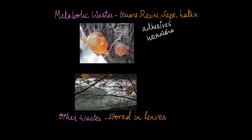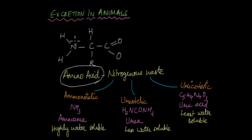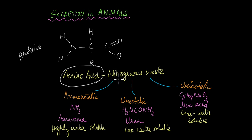What about animals? The main form of waste in animals is nitrogenous waste, and it is produced when amino acids are metabolized in the body. Amino acids are the building blocks of proteins. When proteins are broken down and amino acids are metabolized, the nitrogen in the amino acid contributes to the nitrogenous waste, and it is this nitrogenous waste that needs to be excreted from animals.